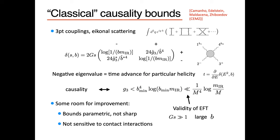Causality — the absence of a time advance — imposes a constraint on the G3 coefficient, which is the coefficient of the R-cubed operator. The constraint prevents negative eigenvalues. To relate this to the UV cutoff, one gets a parametric bound involving the impact parameter at which scattering happens, which must be greater than 1 over the UV cutoff. There's also an infrared logarithm due to long-range gravitational interactions in four dimensions.